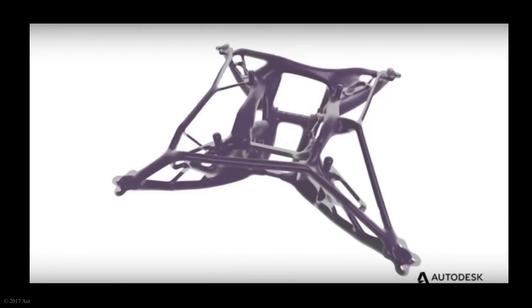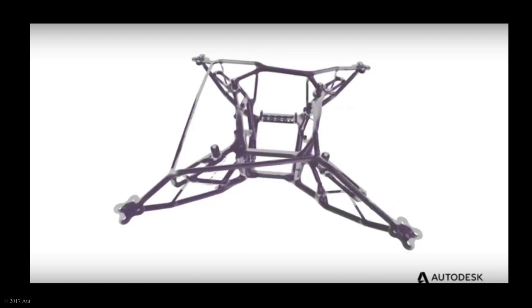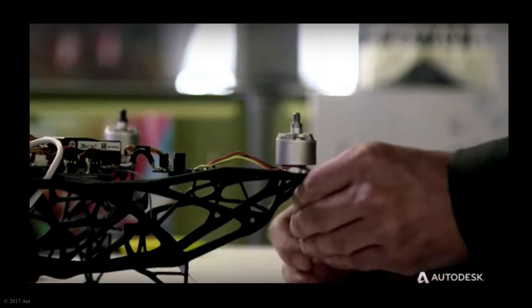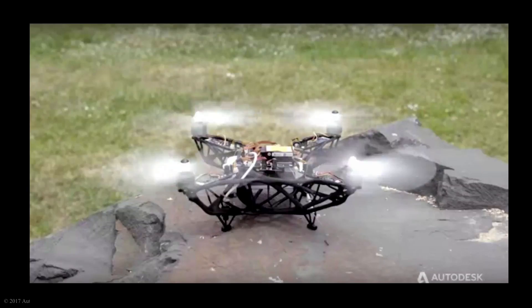Once it iterates once, it runs an analysis. It runs a stress analysis to determine how well it did at satisfying the loads. If there's still more material it can remove, it removes more. It iterates until it can't remove any more material, any more voxels, in one place without adding material elsewhere.